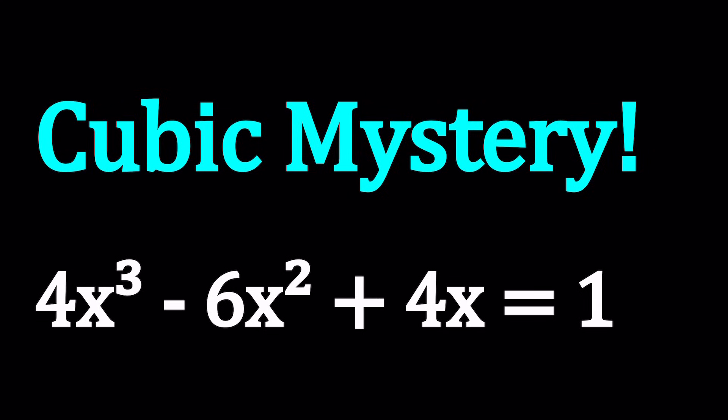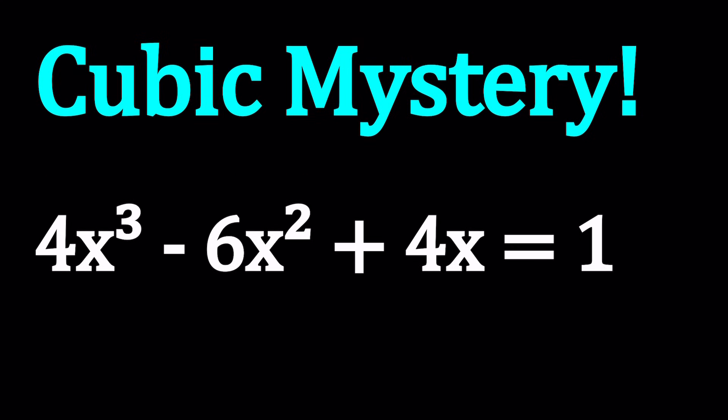Hello everyone. In this video, we're going to be solving a mysterious cubic equation. Why is it mysterious? I'll tell you in a little bit. Now, this equation is 4x³ - 6x² + 4x = 1, and we're going to be solving for x values. I'll be presenting at least two methods. So let's go ahead and start with the first method.